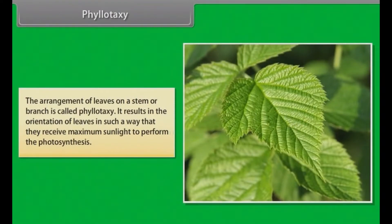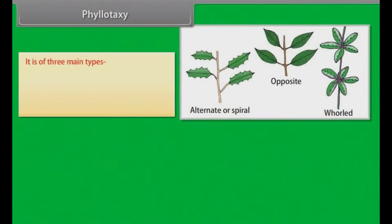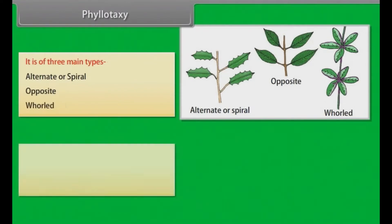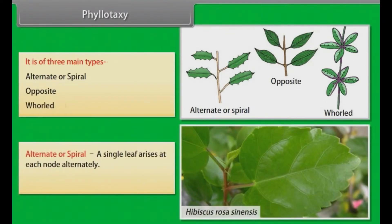Phyllotaxy. The arrangement of leaves on a stem or branch is called phyllotaxy. It results in the orientation of leaves in such a way that they receive maximum sunlight to perform photosynthesis. It is of three main types: alternate or spiral, opposite, and whorled. In alternate or spiral phyllotaxy, a single leaf arises at each node alternately. Example: Hibiscus rosa-sinensis.